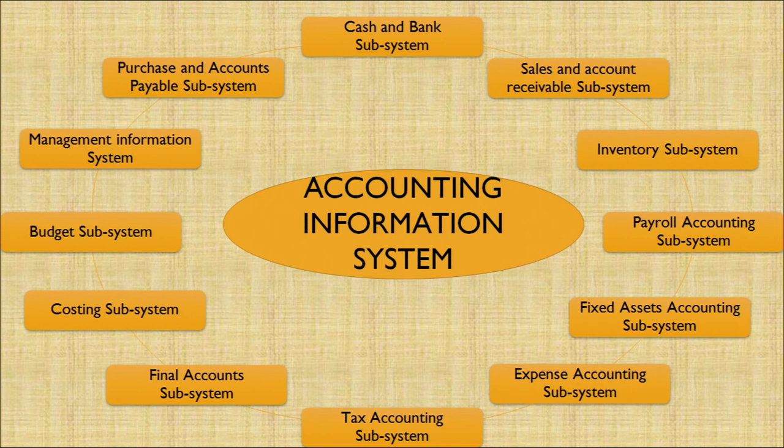There are sub-systems of cash and bank, sales account, inventories, payroll accounts, fixed assets accounts, expense accounting, tax accounting, final accounts, costing, budget management, and purchase accounts — these are called sub-ledgers of the main ledger. These sub-ledgers contribute to the main ledger and help draft the trial balance for an organization.